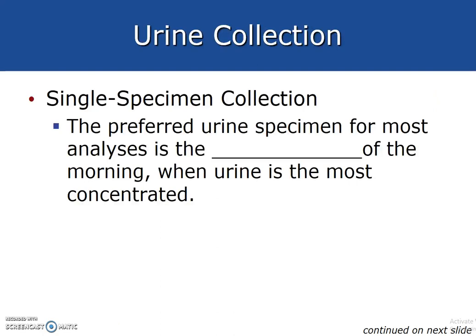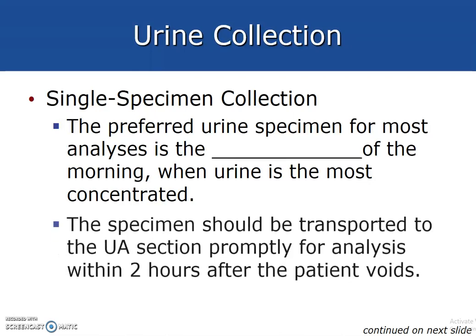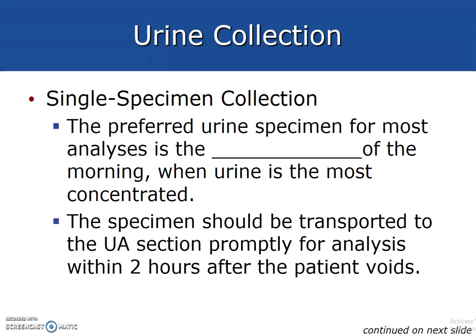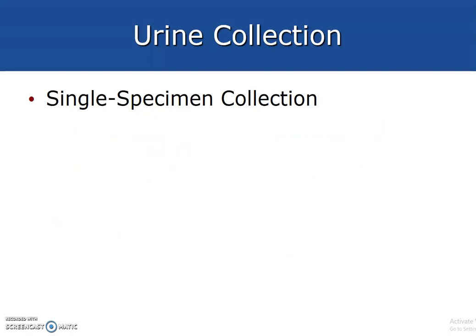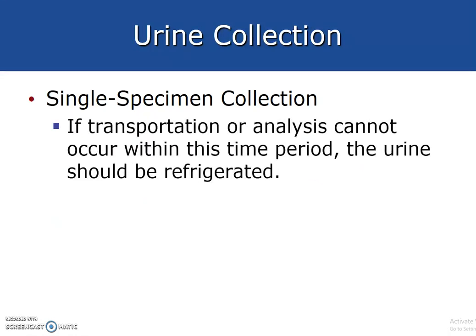For single specimen collection, the preferred urine specimen for most analysis is the first of the morning when urine is most concentrated. The specimen should be transferred to the UA section promptly for analysis within two hours after the patient voids. If transportation or analysis cannot occur within this time period, the urine should be refrigerated.